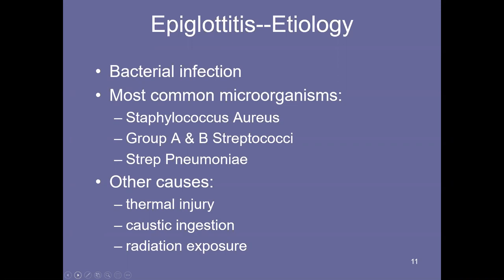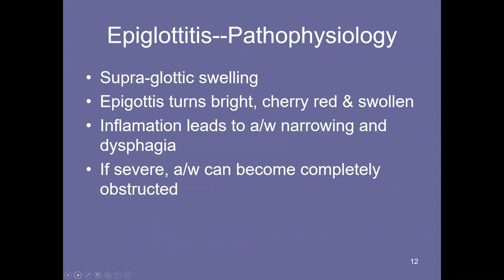Other causes in adults — such as those 25, 45, or 65 years old — can include thermal injury, caustic ingestion, or radiation exposure, whether inadvertent or deliberate to treat malignancies. The pathophysiology involves supraglottic swelling. The epiglottis turns bright cherry red and swollen. Inflammation can lead to airway narrowing and dysphagia — the inability to swallow. If severe, the airway can become completely obstructed. Some of these children present to the emergency room leaning forward, looking very sick, drooling because it's so painful to swallow their own saliva.